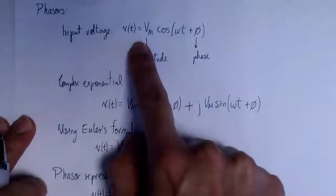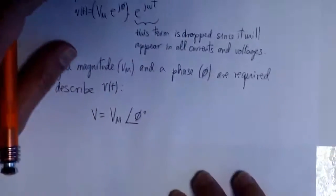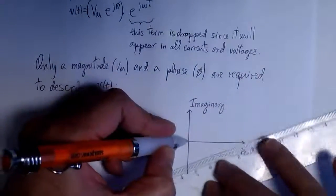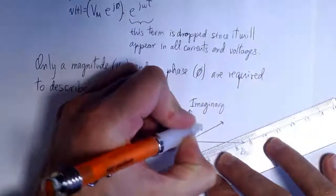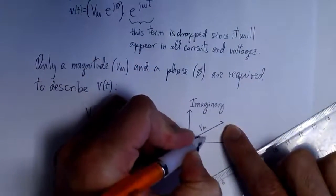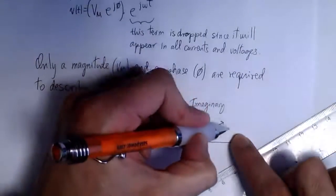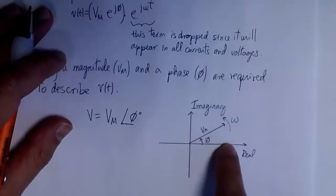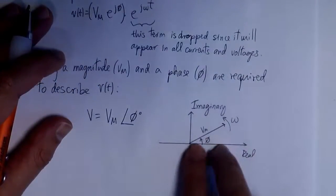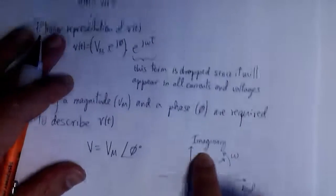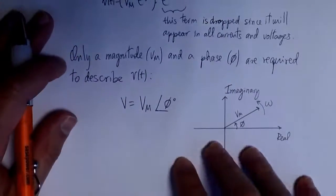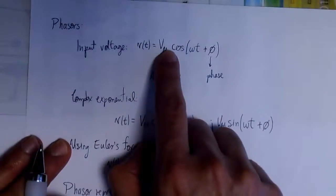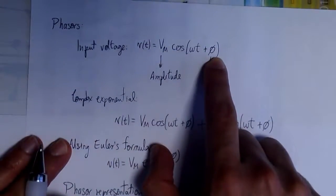The phasor representation of V(t) is going to be just some magnitude Vm and some phase φ in degrees. V(t) is the real function in time, and this is the phasor representation of that function. If we go to the complex plane — where we have the imaginary and the real axis — we can think of the phasor as a vector with magnitude Vm and phase φ, rotating with constant angular speed omega. Its real part changes according to a cosine function, just like our real function.